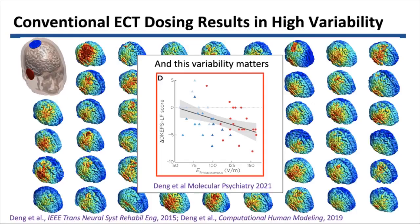Studies such as this by Zidang showed that the strength of the electric field induced in the hippocampus on the x-axis was significantly correlated with memory loss on the y-axis. So we'd like to make it more focal to avoid this.